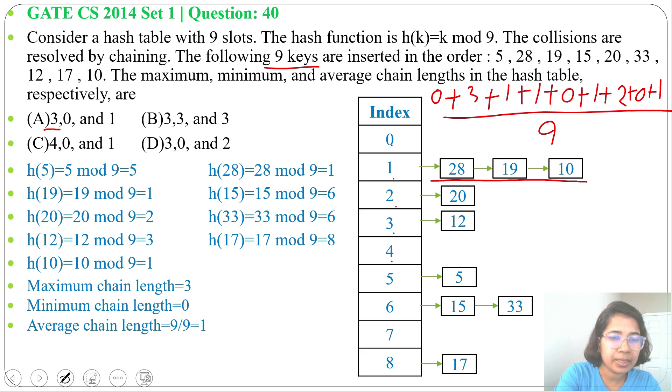Option A: 3, 0, 1. Yes, answer is 3, 0, 1. So answer will be option A. Maximum chain length is 3, minimum is 0, and average chain length is 1.